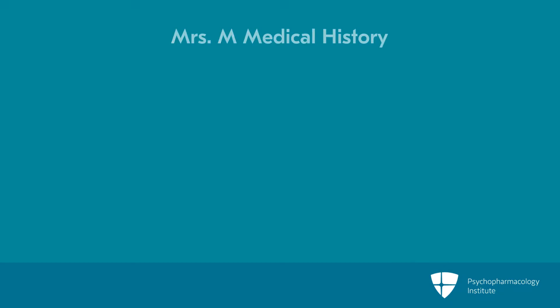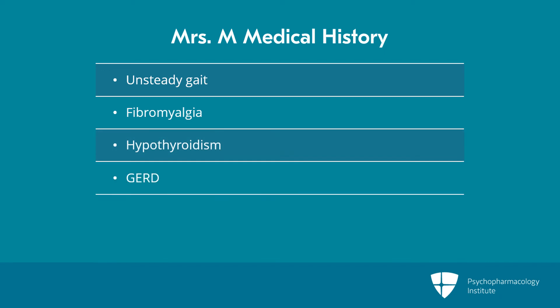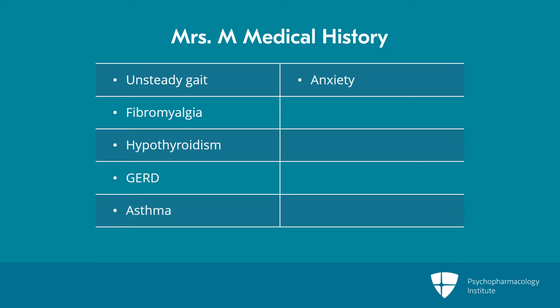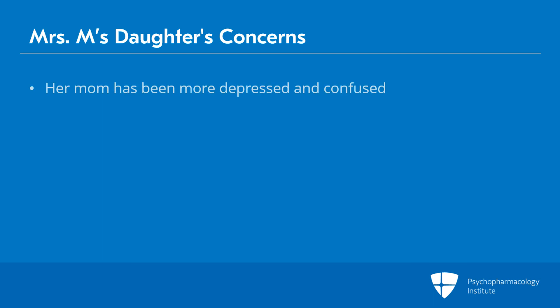Her past medical history is significant for unsteady gait, fibromyalgia, hypothyroidism, GERD, asthma, anxiety, depression, type 2 diabetes, and constipation. Her daughter is concerned that her mom has been more depressed and confused, and worries about a possible dementia diagnosis.